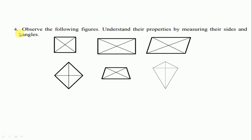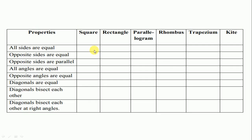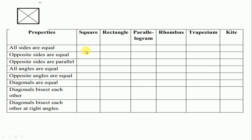Question number 4: observe the following figure. Understand their properties by measuring their sides and angles. First, we write the property of square. All sides are equal in a square. All sides equal — so we tick as right.